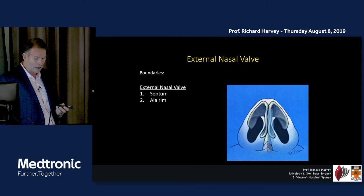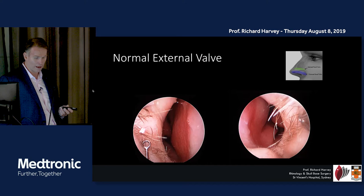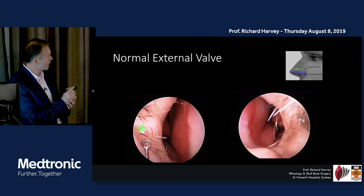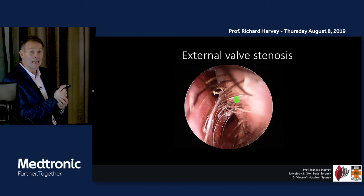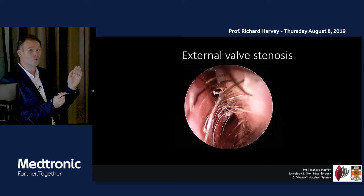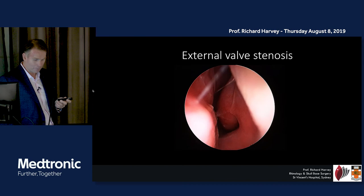The septum, lateral cartilage, and fibro-fatty tissue along with the sill form this triangle we call the external valve. In some people it sags — especially with age or previous trauma — and sits on the septum, becoming the sole cause of that person's breathing problem. You can look in and might see a bit of allergy or minor turbinate problem, but the valve is the sole cause.